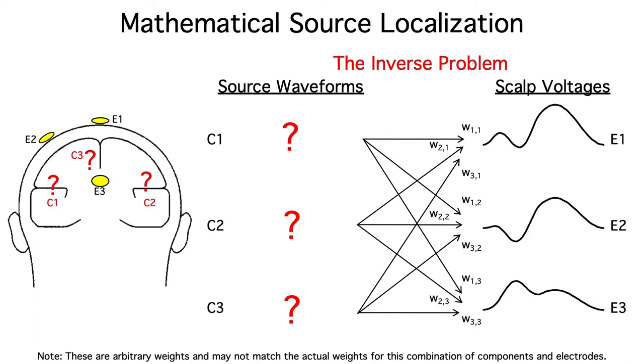Unfortunately, the inverse problem isn't so straightforward. In fact, it's an ill-posed problem. There's an infinite set of underlying generator configurations that could perfectly explain any given observed scalp distribution.